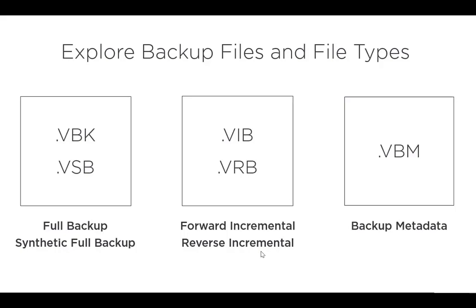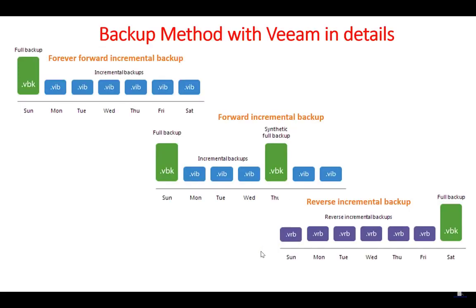I will explain in my demo classes how we can recognize these backup types. The first backup is always the full backup, represented by VBK. After that we have VIB, which is the forward incremental backup. In the second figure we have the forward incremental backup and then VBK which is the synthetic full backup. The last one is VRB which is the reverse incremental backup, and the last backup in that chain is the full backup.